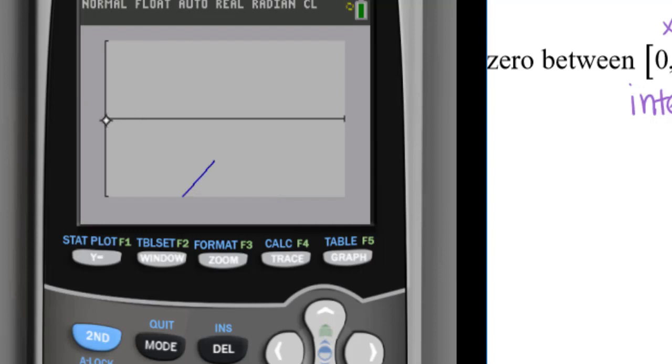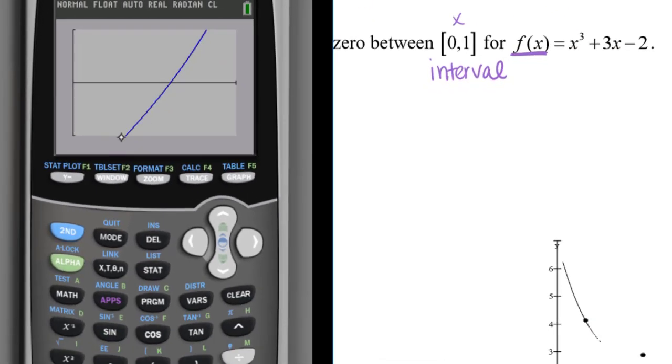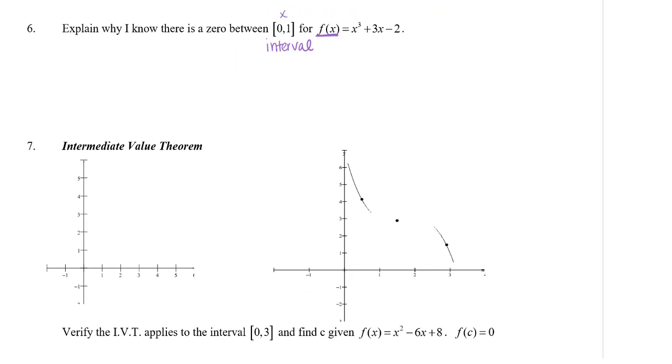So again, my x equals 0 and x equals 1 are the ends of my graph, and so I can see what is happening here. So let's look numerically at why this works. I can see that I'm also continuous between 0 and 1.